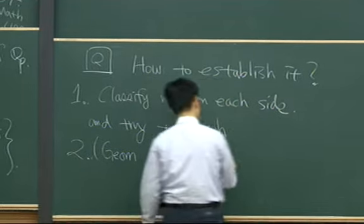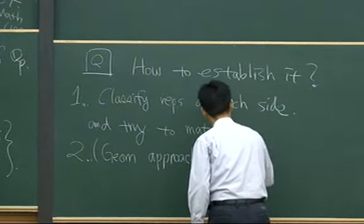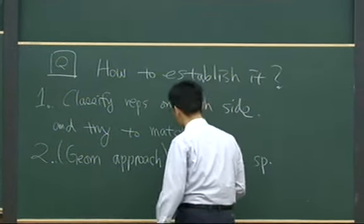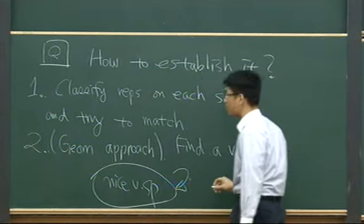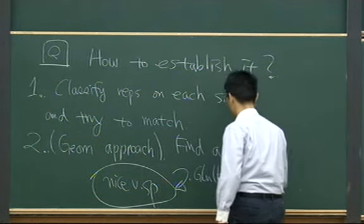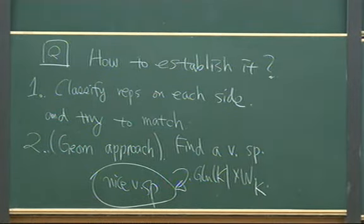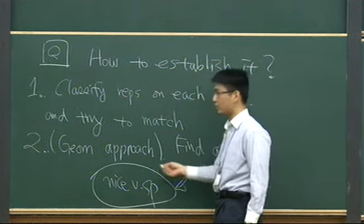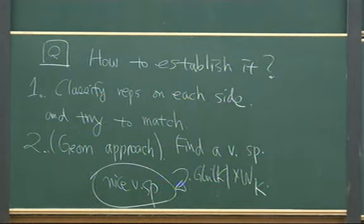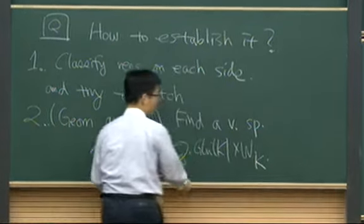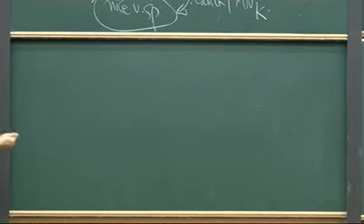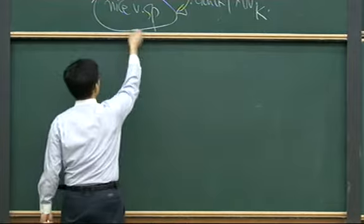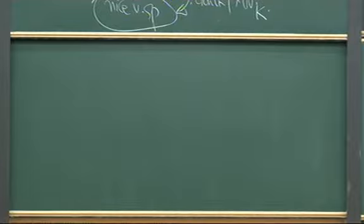The idea of the geometric approach is to find a nice vector space that comes with commuting actions of GL_N(K) and the Weil group, so that the group action reflects the local Langlands correspondence when they act on this vector space. This is natural from the viewpoint of representation theory — one of the best ways to understand a group is to find the natural vector space on which it acts. The idea is you find this nice vector space from geometry.